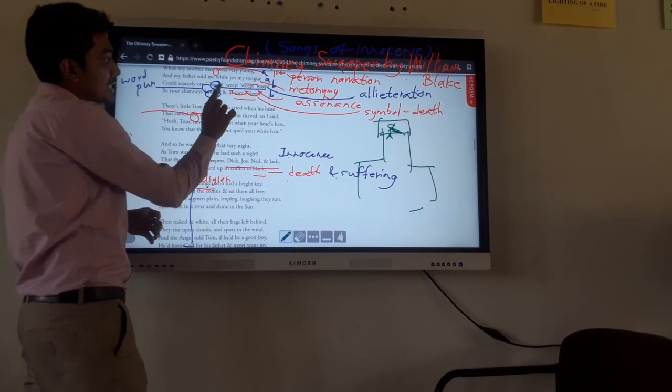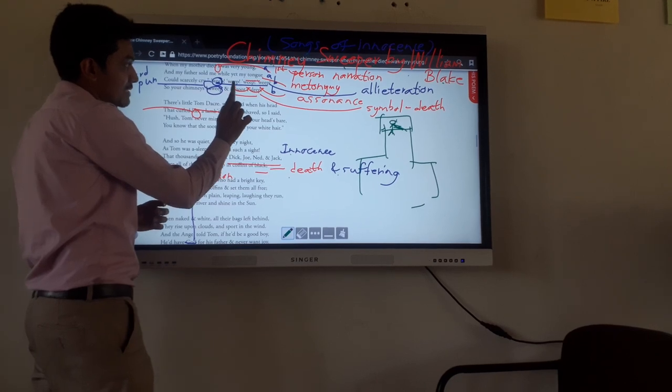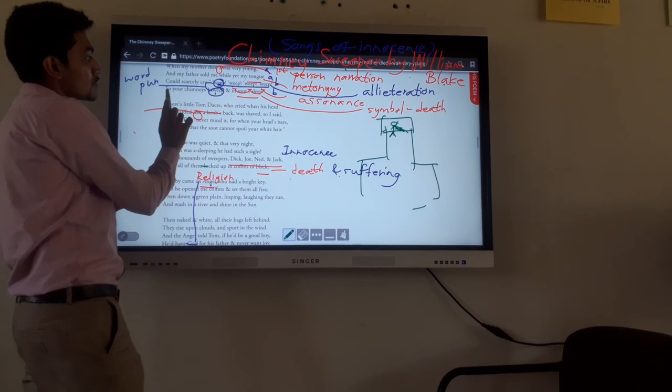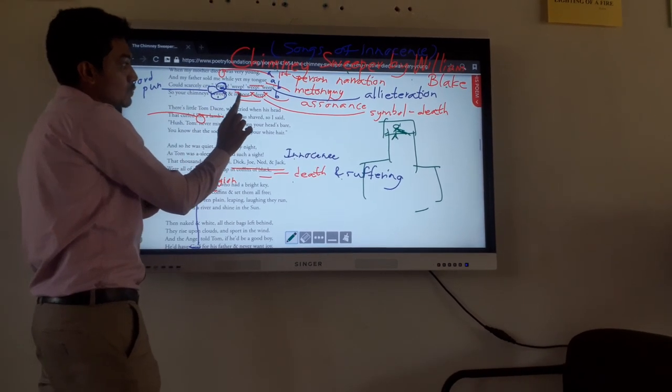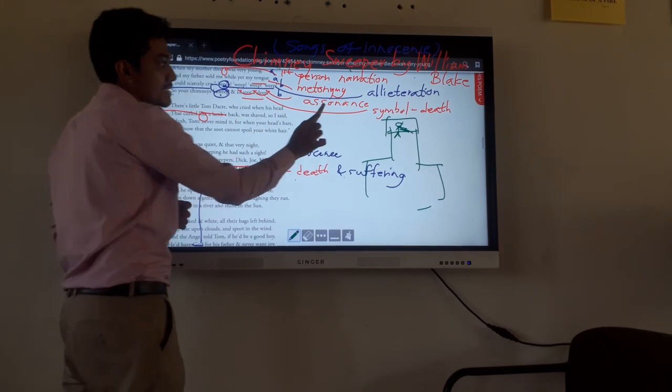Who scarcely cried weep, weep, weep. The technique of alliteration is there, assonance is there. Word pun also, weep and sweep. So your chimneys I sweep, in soot I sleep. The soot symbolizes death.